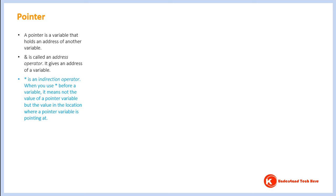A pointer is a variable that holds an address of another variable. Since it holds an address of another variable, it points to some variable — and that's why it's called a pointer. Let's clarify these points with an example and look at a program.